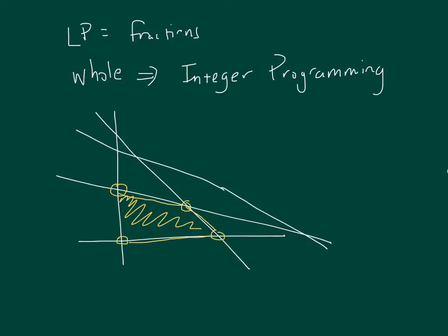So, with integer programming, that's no longer the case. Now our feasible solutions are only the integer ones, and so there's no nice algorithm that is guaranteed to be efficient to move from one point to the next point. So, it makes it more difficult, theoretically.